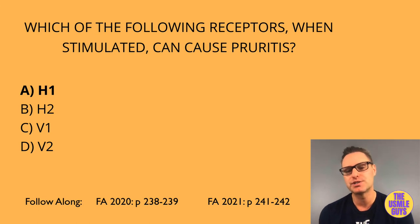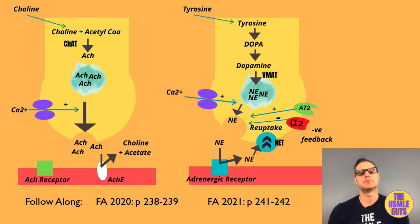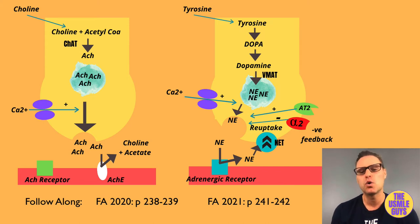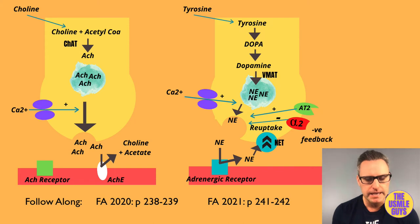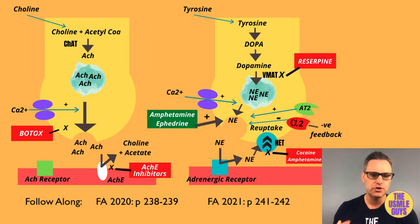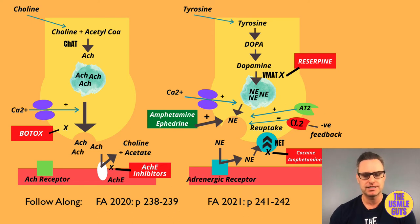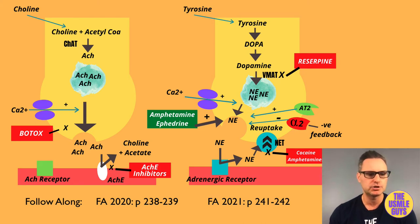V2 also increases the release of von Willebrand factor. Before moving on, make sure you know the synthesis of acetylcholine and norepinephrine and the medications that can inhibit or speed up their release — this information is in First Aid and is high yield.